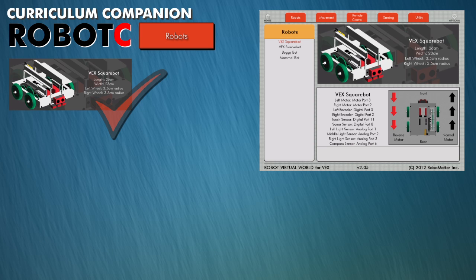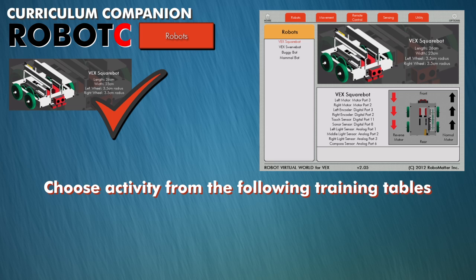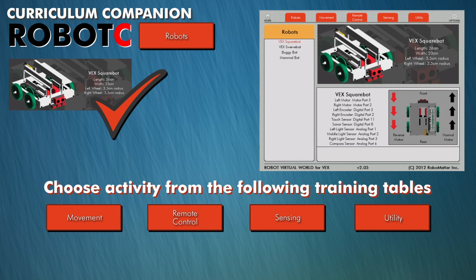Once the robot has been selected, students can choose an activity from any of the following categories: Movement, Remote Control, Sensing, and Utility Tables.